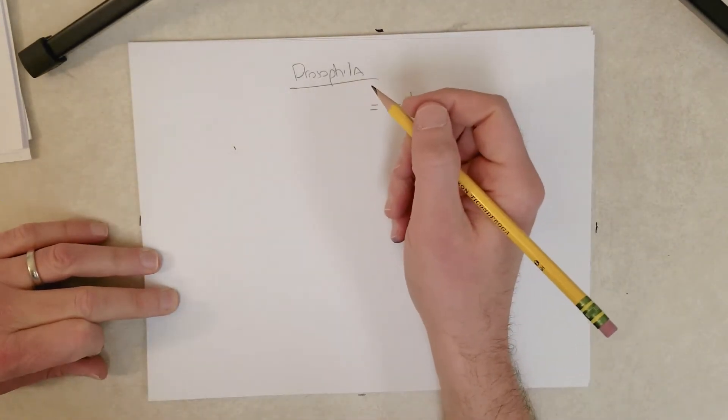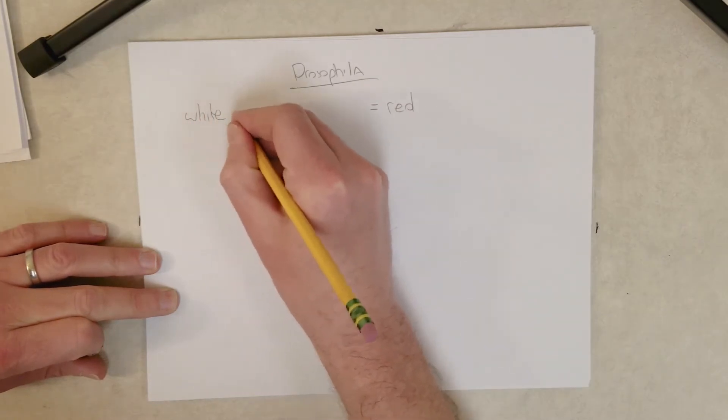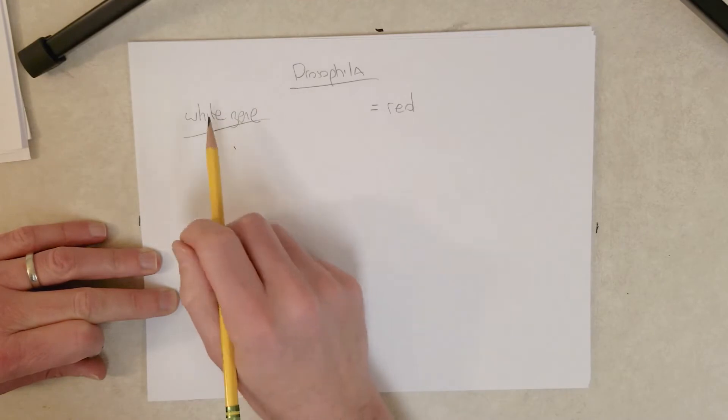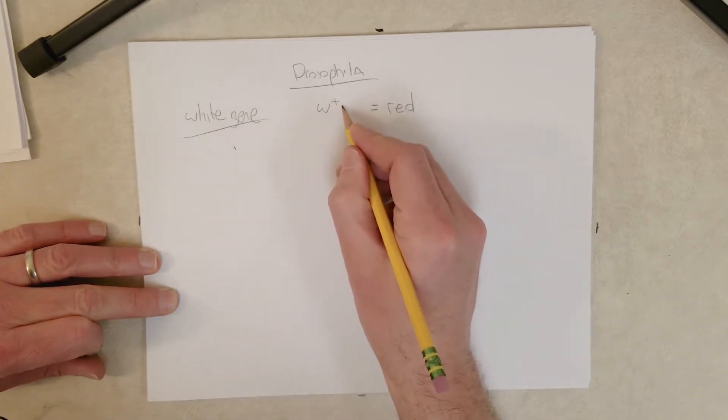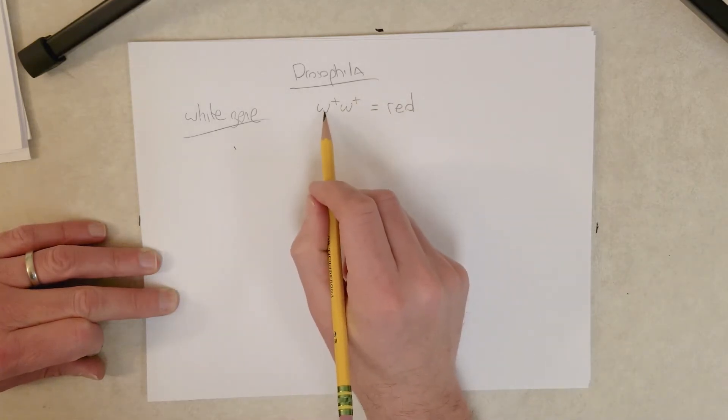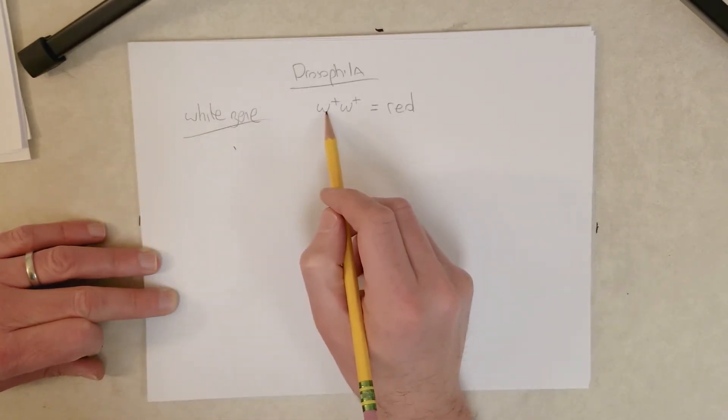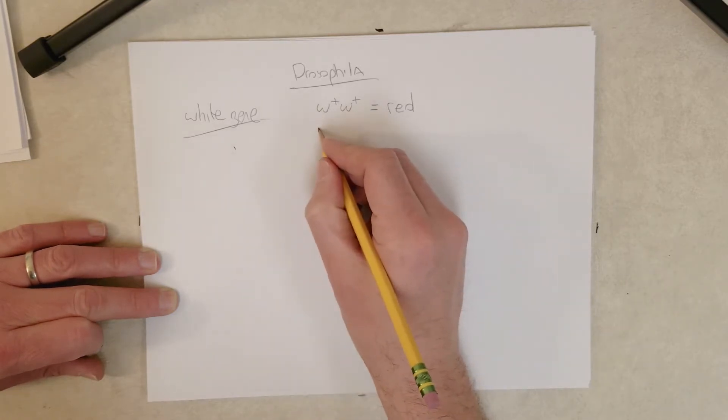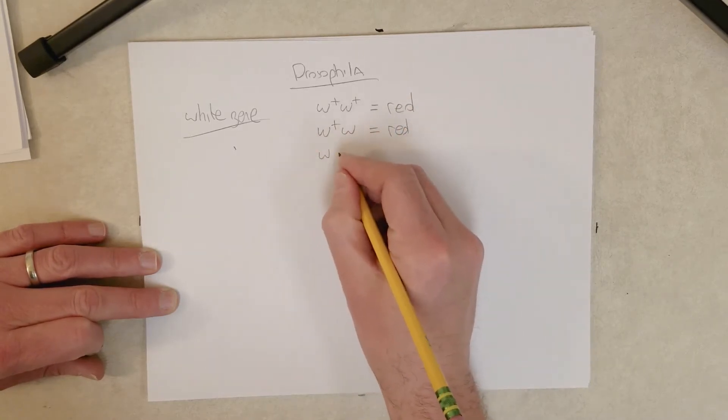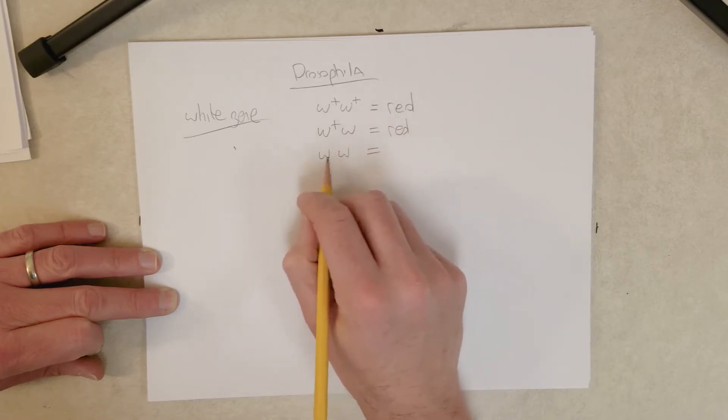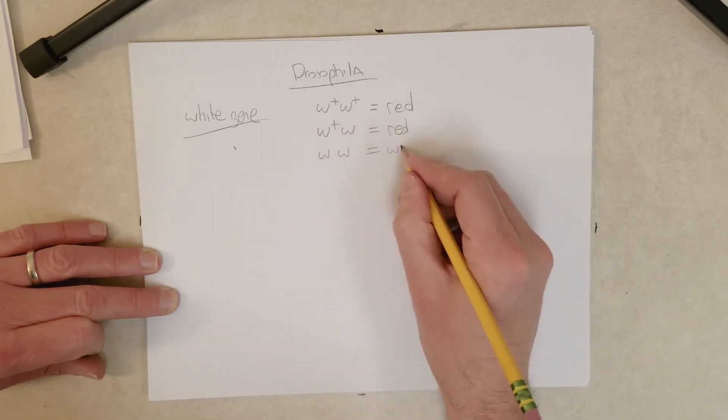Now there is a gene called the white gene. You can probably guess when the white gene is mutated, the eyes are going to be white. Let's take Drosophila females first. We will symbolize alleles of the white gene with a W and put a superscript plus to indicate the wild type allele. Two wild type alleles give red eyes, heterozygous is also red, and two mutant alleles give the white eye.